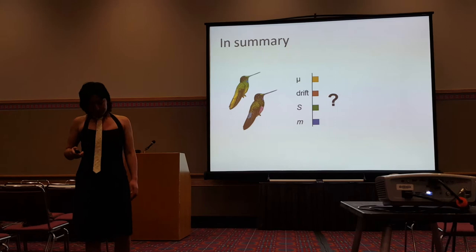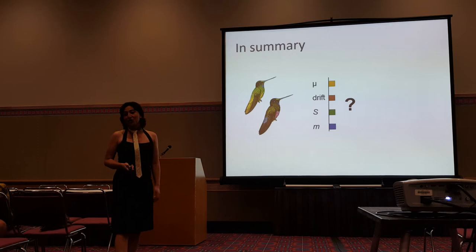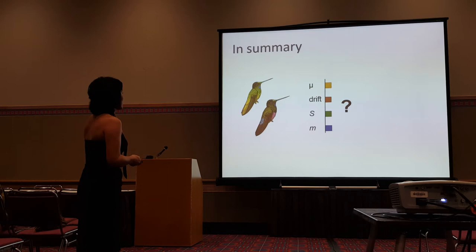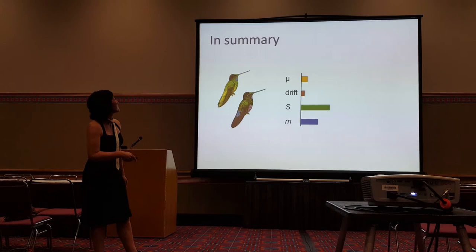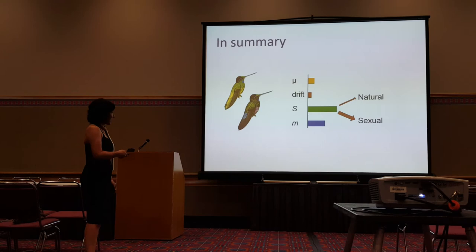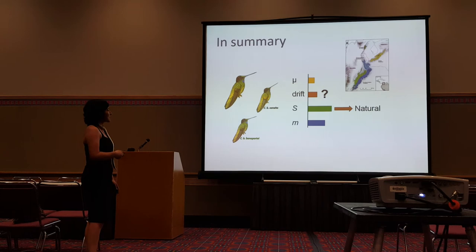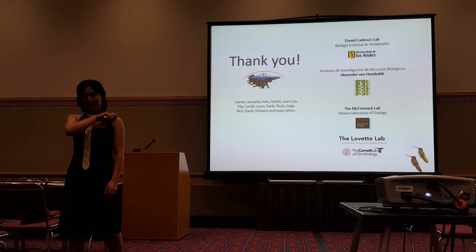So in summary, you can predict very well the evolutionary history between these two species. They are one in the mitochondrial genome but they are not the same in the nuclear genome. Regarding mechanisms, we have divergence with gene flow, suggesting strong selection. Considering that we found no differences in climatic niche, this could be related primarily to sexual selection driving the differentiation in coloration. The divergence between the two species could be related primarily to natural selection, given the differences we found in climatic niche.